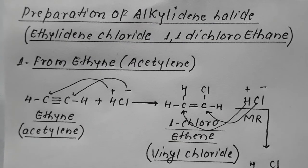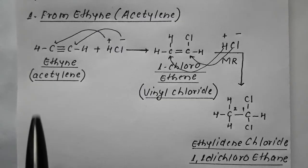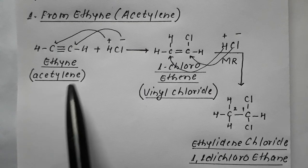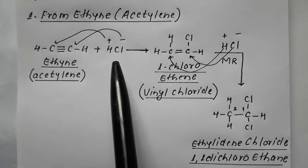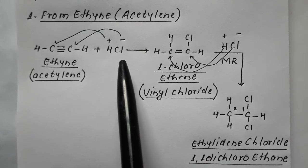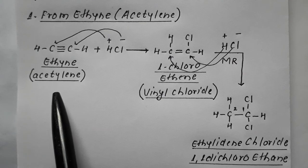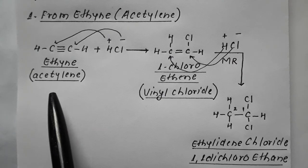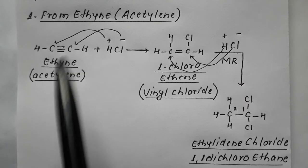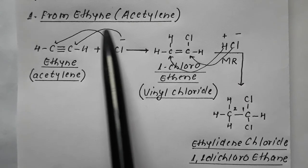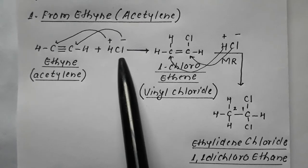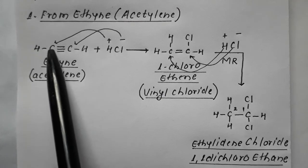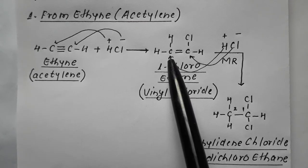When ethyne (acetylene), which has a carbon-carbon triple bond, is made to react with HCl — where H is positively charged and Cl is negatively charged — since the molecule is symmetric, Markovnikov's rule is not applicable in the first addition. Hydrogen can attach to either carbon, so this first addition does not follow any rule.